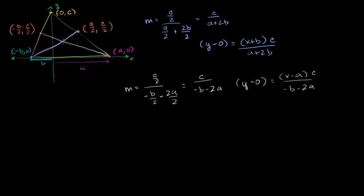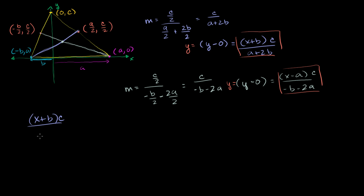We can now use that information to find their intersection, which is going to be the centroid. Since both equations have y on the left side, we set them equal: (x + b) · c / (a + 2b) = (x - a) · c / (-b - 2a). Both sides are divisible by c, and we can assume c is non-zero since the triangle actually exists in two dimensions, so we divide both sides by c.